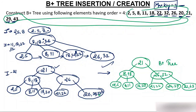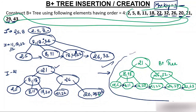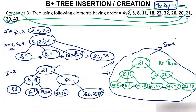You can verify all the B+ tree properties. All elements are at leaf nodes, and all leaf nodes are connected with linked list pointers so you can traverse sequentially. I'll use this same tree in the next video for deletion in B+ tree. So wait for the third video on B+ tree deletion.